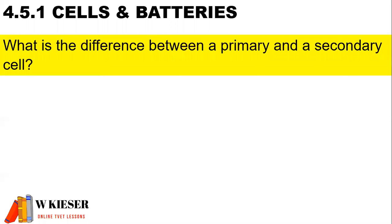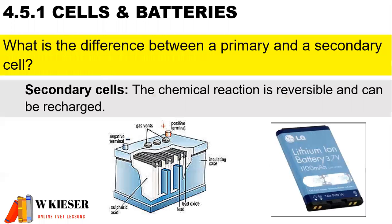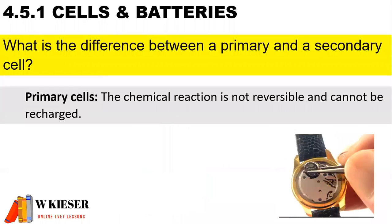What is the difference between a primary and secondary cell? Secondary cells have a reversible chemical reaction and can be recharged. Primary cells have a chemical reaction that is not reversible and cannot be recharged.